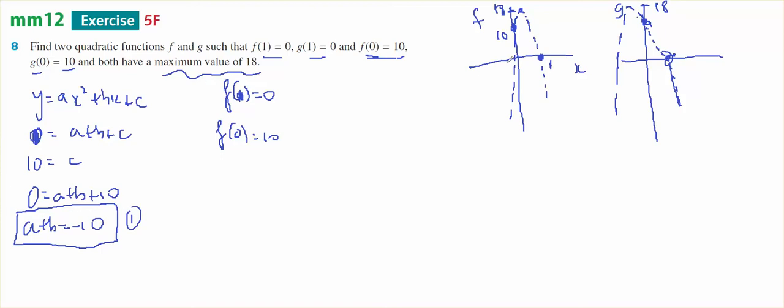Now, I really don't have any other information because I've subbed in these two pieces of information. That gave me one equation and it gave me c equals 10. What I do know is that the turning point is at a y value of 18. How do I find that x value? I can use halfway between the x-intercepts, but I've only got one of them.